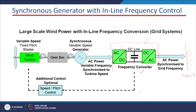In this block diagram, the electronic converters are connected between our wind energy system and the grid system. This is a large-scale wind power in-line frequency conversion system — it is 'in-line' because the total amount of power generated by the synchronous generator is fed to the grid through the power electronic converters. One hundred percent of the power flows through this converter section to reach the grid.